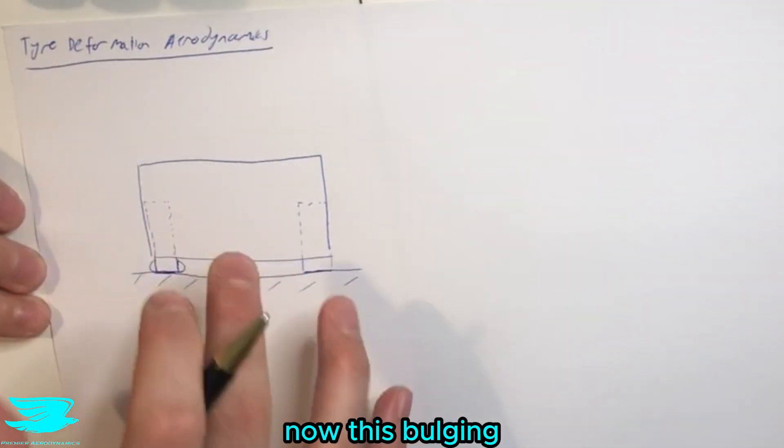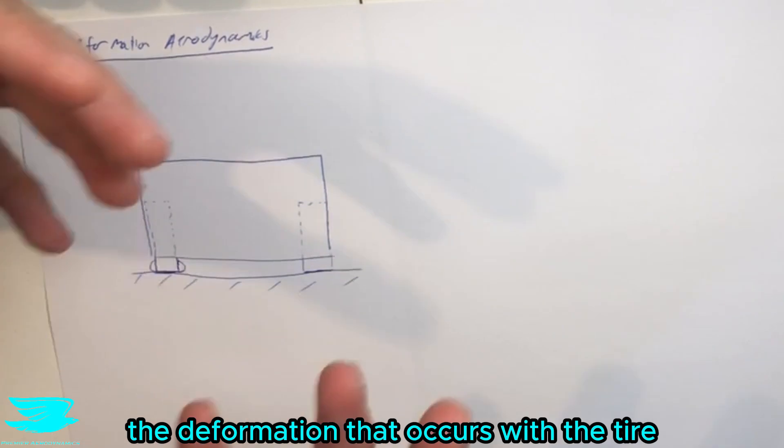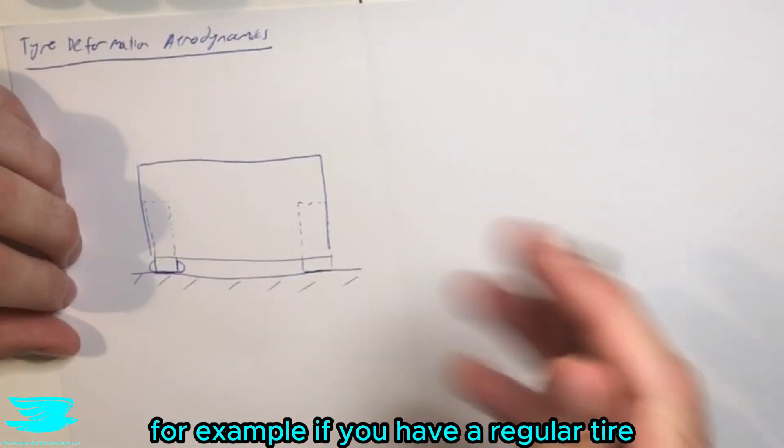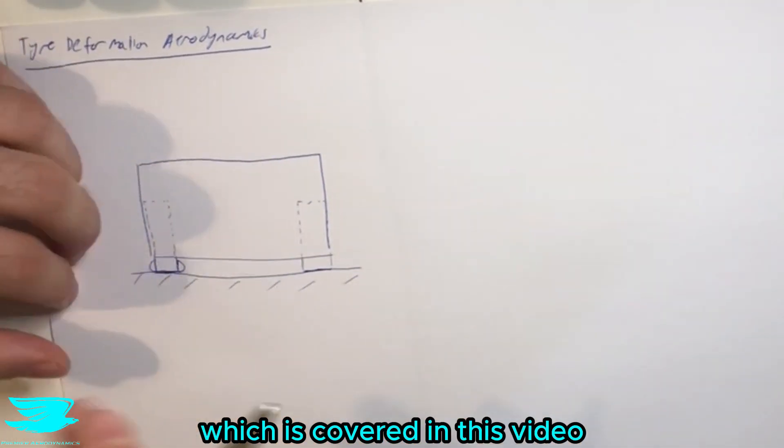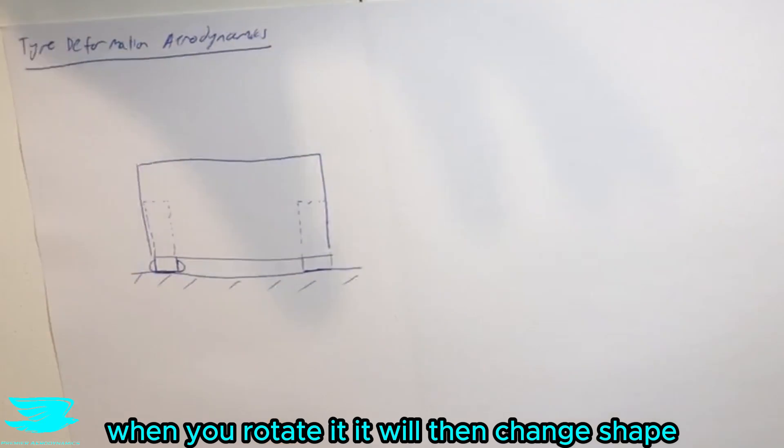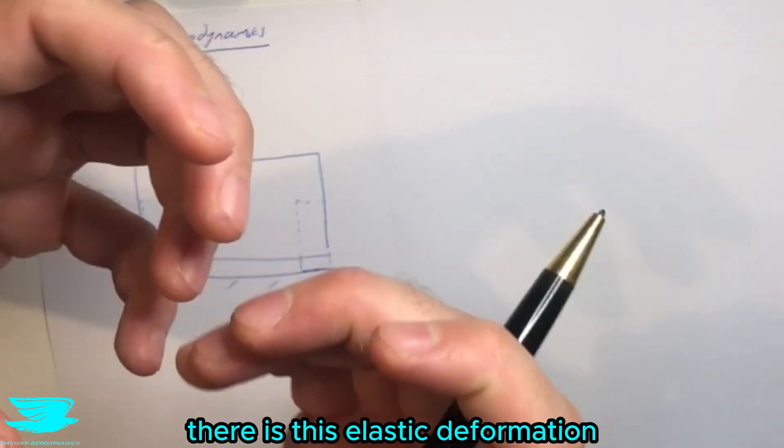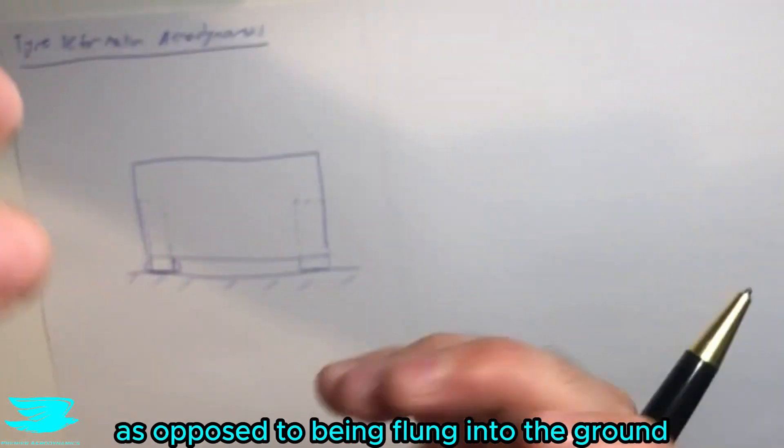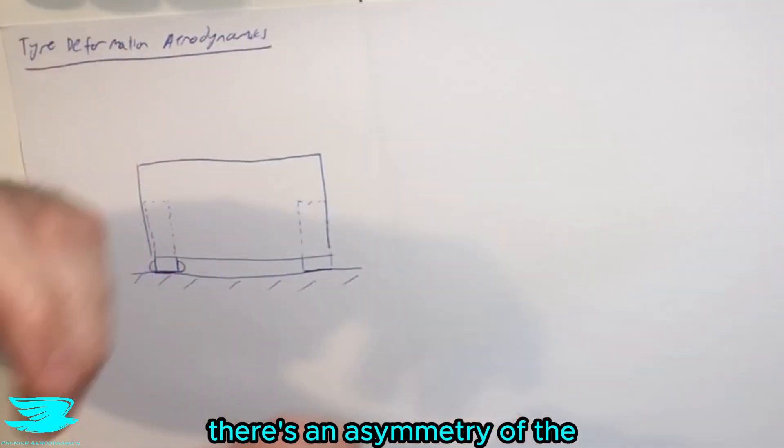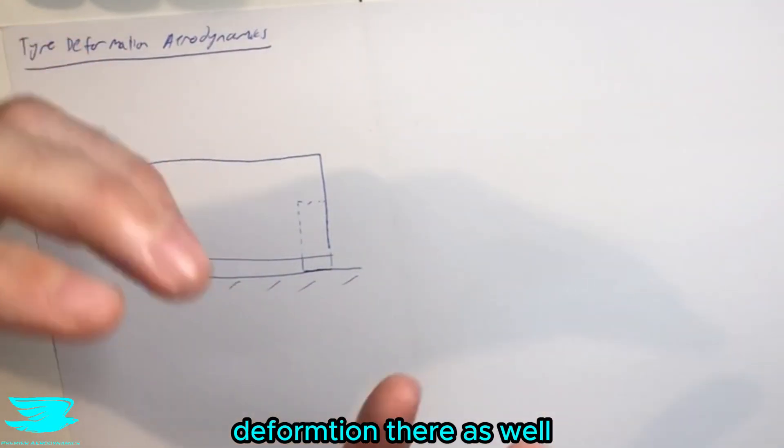Now this bulging, this deformation, is not all the deformation that occurs with the tire. For example, if you have a regular tire, which we've covered in this video, when you rotate it, it will then change shape. And also just because it's rubber, there is this elastic deformation as the tire pulls up off the ground as opposed to being flung into the ground, so there's an asymmetry of the deformation there as well.